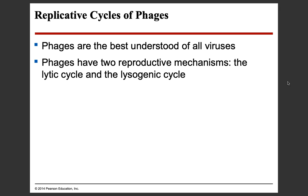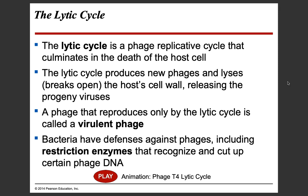Phages are the best understood of all the viruses. We can study them very easily because we cannot be infected by them — phages only infect bacteria. We're also trying to use them as tools to help target cancer eventually; they're a huge topic of research right now. Phages are very easy to study because they pose no risk to us. Phages have two reproductive mechanisms: the lytic and the lysogenic cycles.